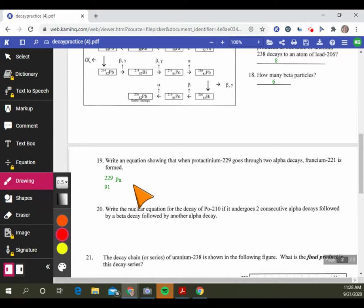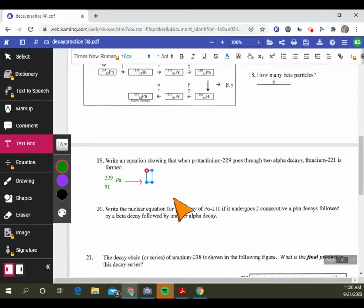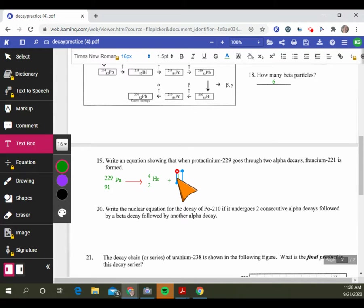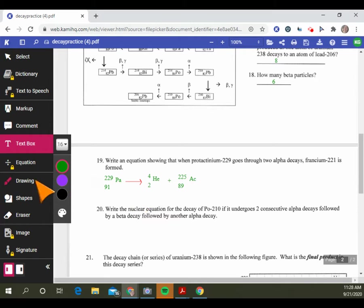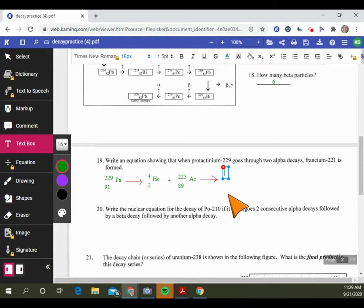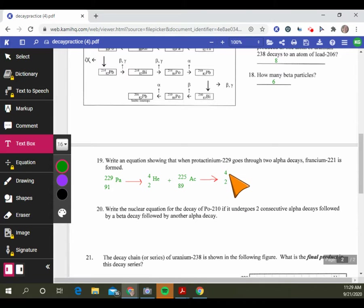Write an equation showing that when protactinium-229 goes through two alpha decays, francium-221 is formed. We're going to start with 229 and protactinium is number 91. I'm going to make an arrow. Protactinium-91 undergoes two alpha decays. So I know my alpha decay is 4-2 helium. What am I going to come up with?